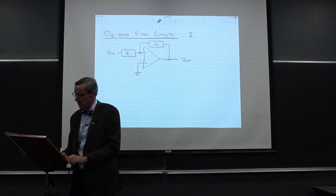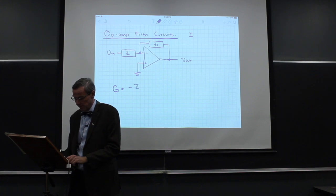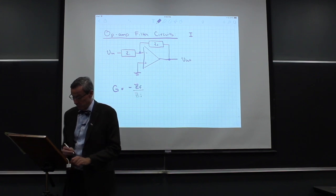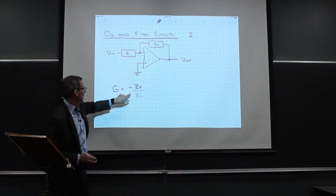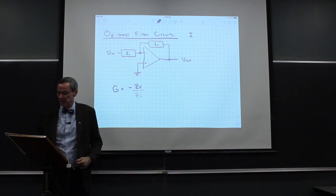So we can start by simply writing down that the gain of this circuit is just minus Z feedback over Z input. Same thing we had before with resistors, the feedback divided by the input with a minus sign. So there's the gain.